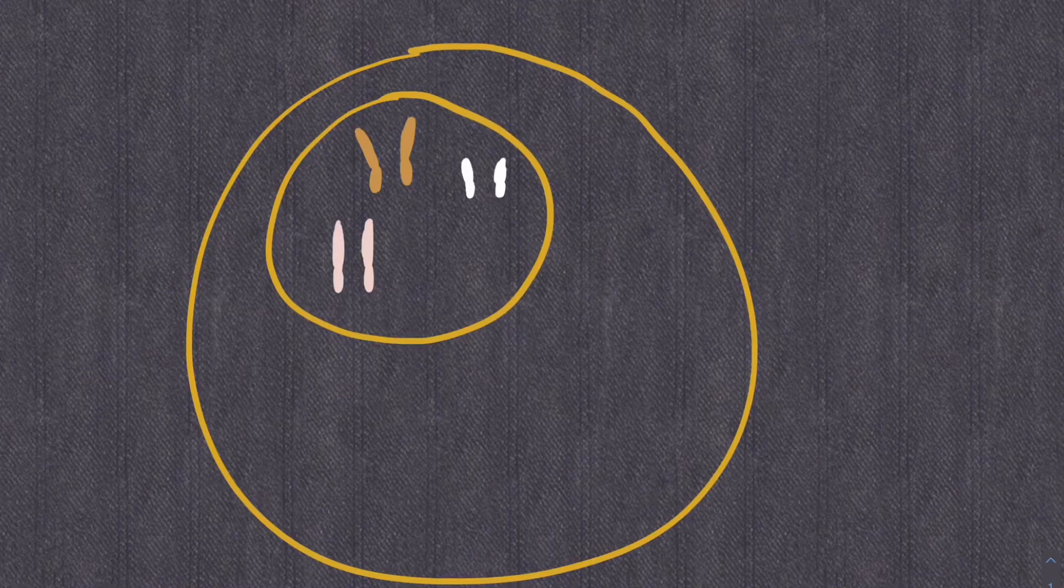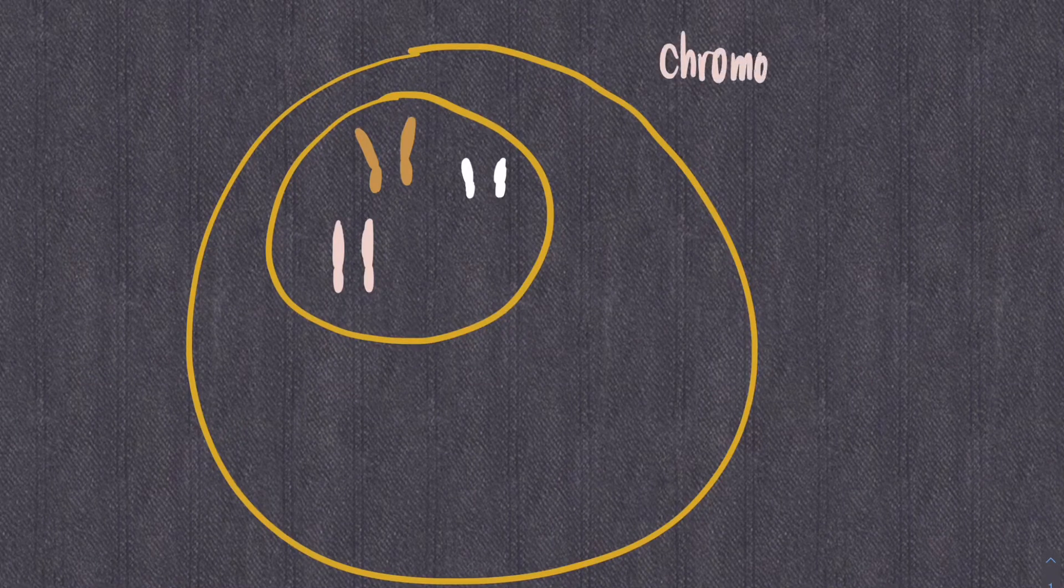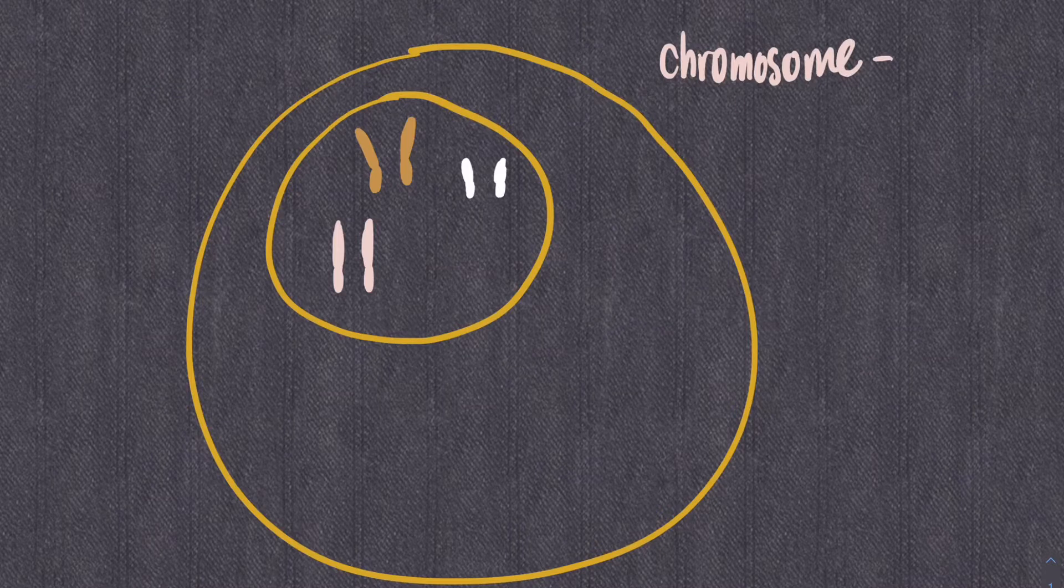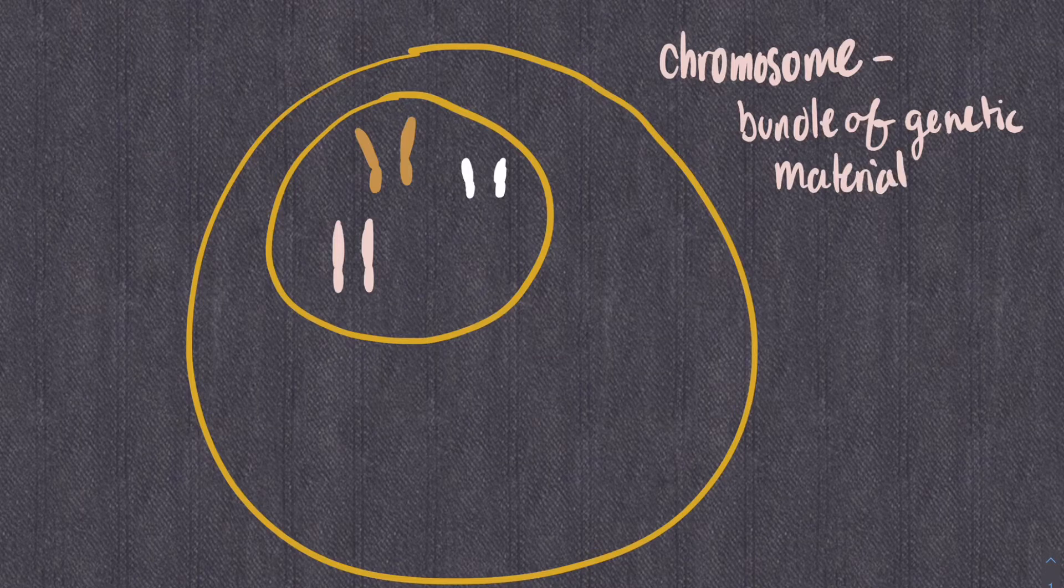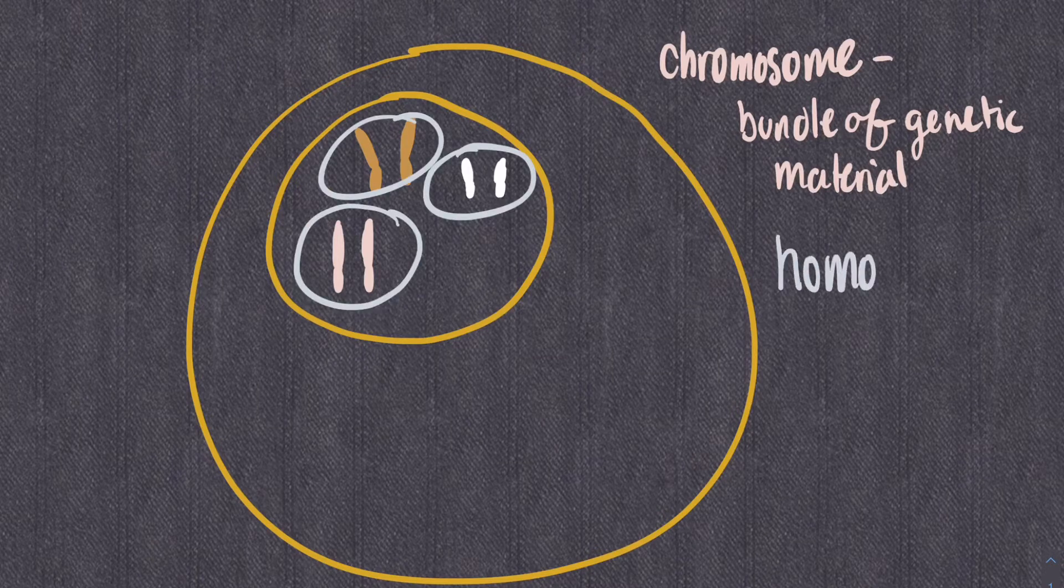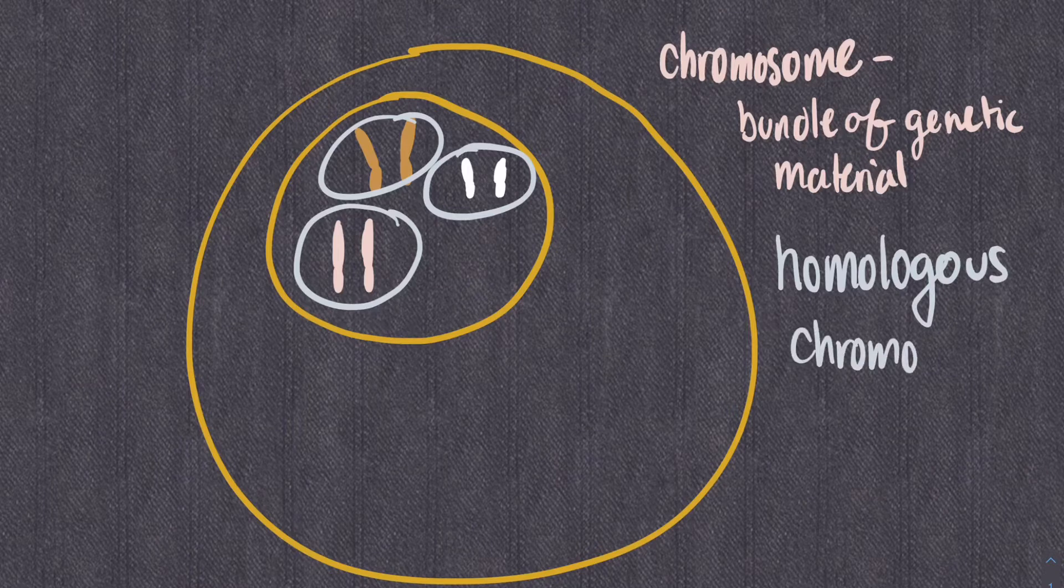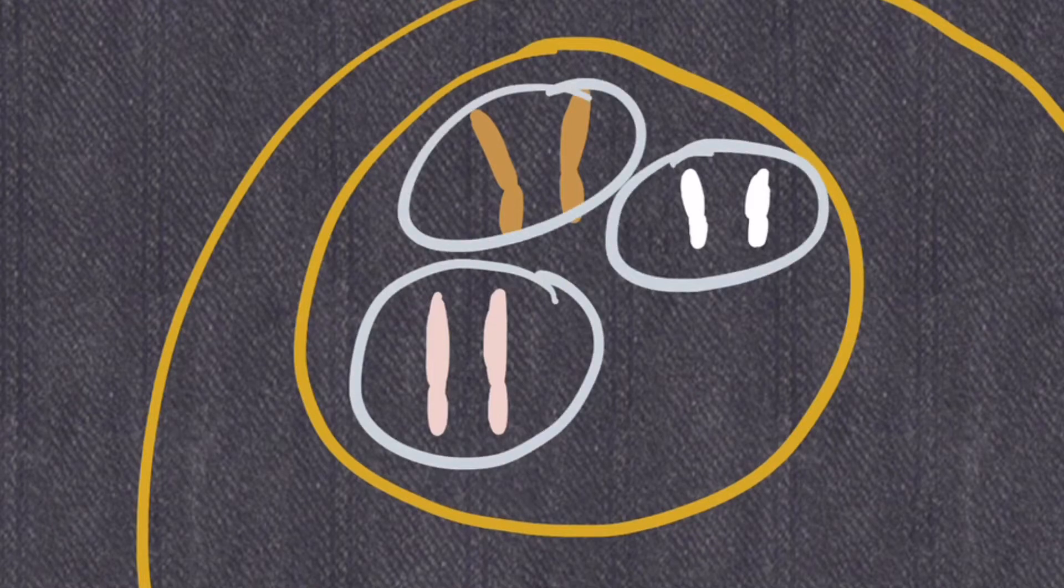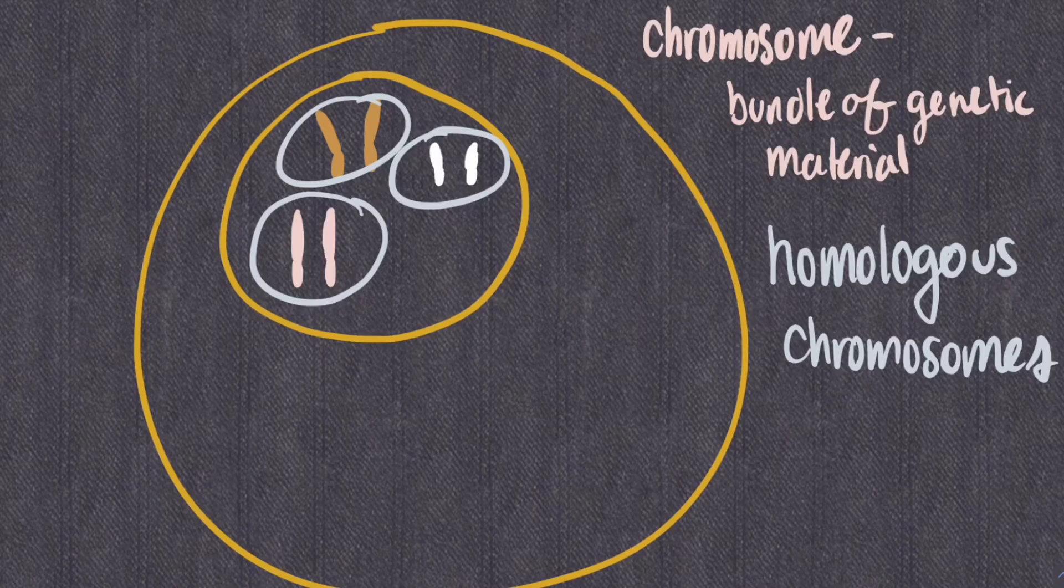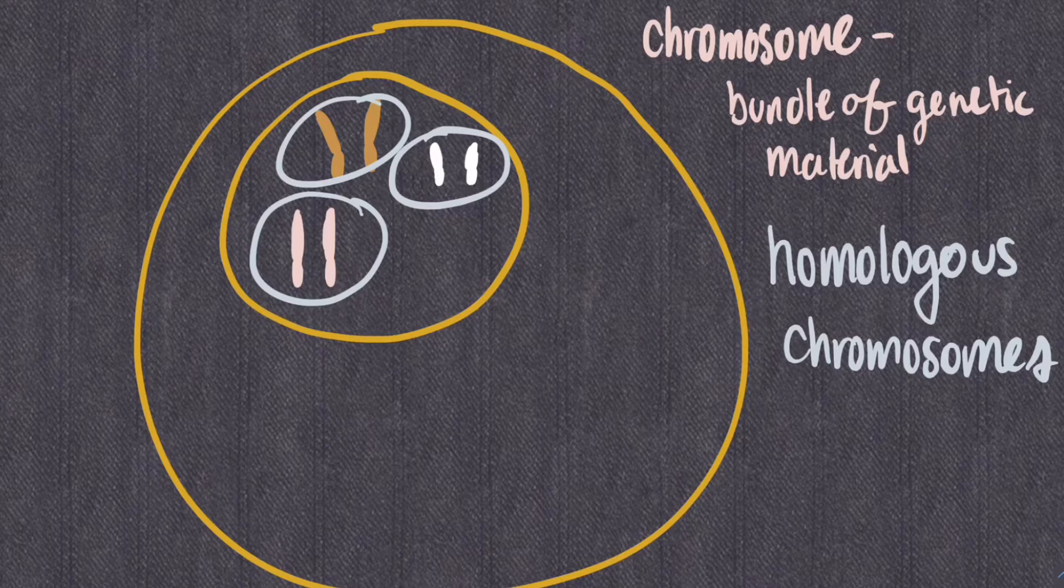So we're going to start with a parent cell. Notice that this cell has two sets of each chromosome. A chromosome is a bundle of genetic material that codes for specific things in an organism. Homologous chromosomes are a pair of chromosomes, one from each set, that code for the same things. These two are homologous chromosomes. They're about the same size and the same shape and contain genes that code for the same things. They are not, however, identical. They may contain different alleles for the specific genes that they code for.